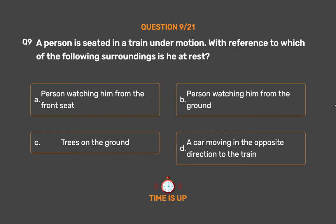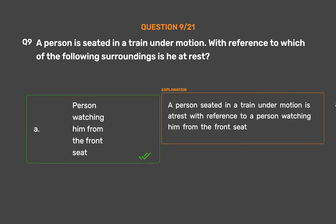The correct answer is Option A: Person watching him from the front seat. A person seated in a train under motion is at rest with reference to a person watching him from the front seat.